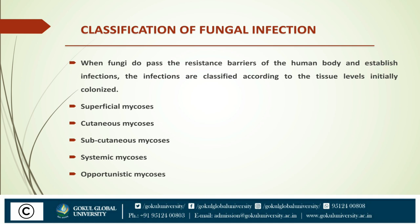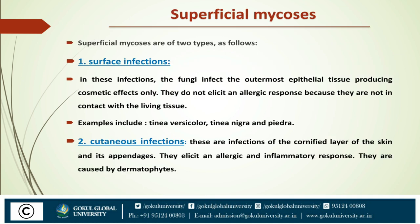The first type is superficial mycosis. Superficial mycosis are of two types: surface infection and cutaneous infection. In surface infection, fungi infect the outermost epithelial tissue producing cosmetic effects only. They do not elicit an allergic response because they are not in contact with living tissue. Examples include tinea versicolor, tinea nigra, and piedra.